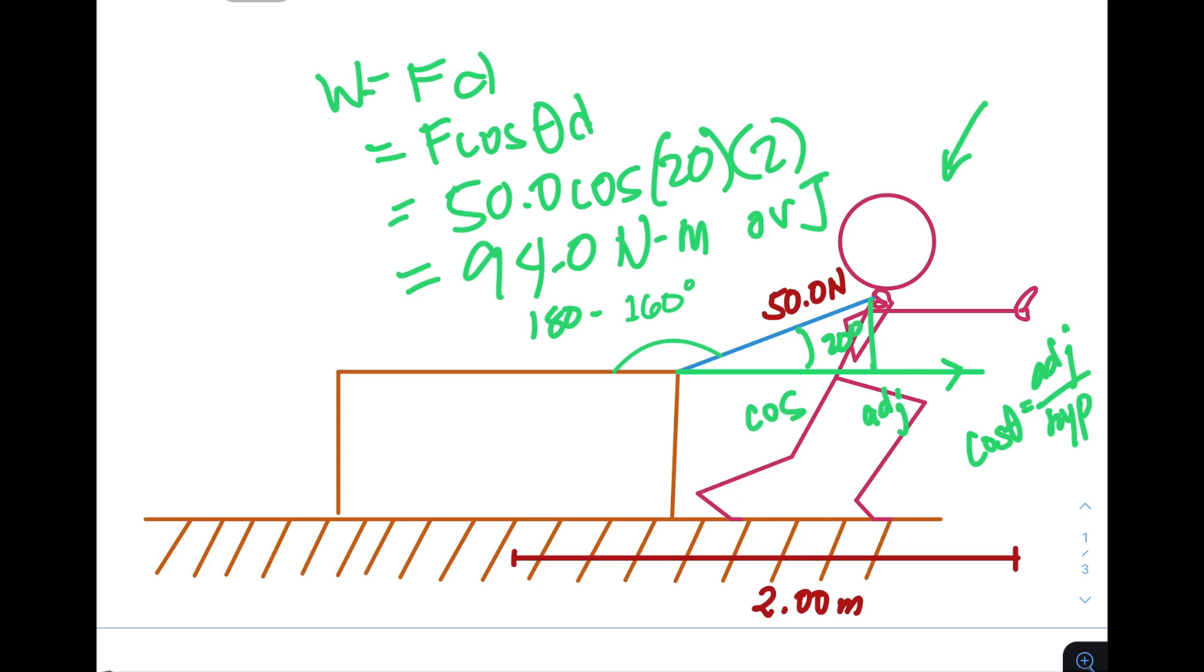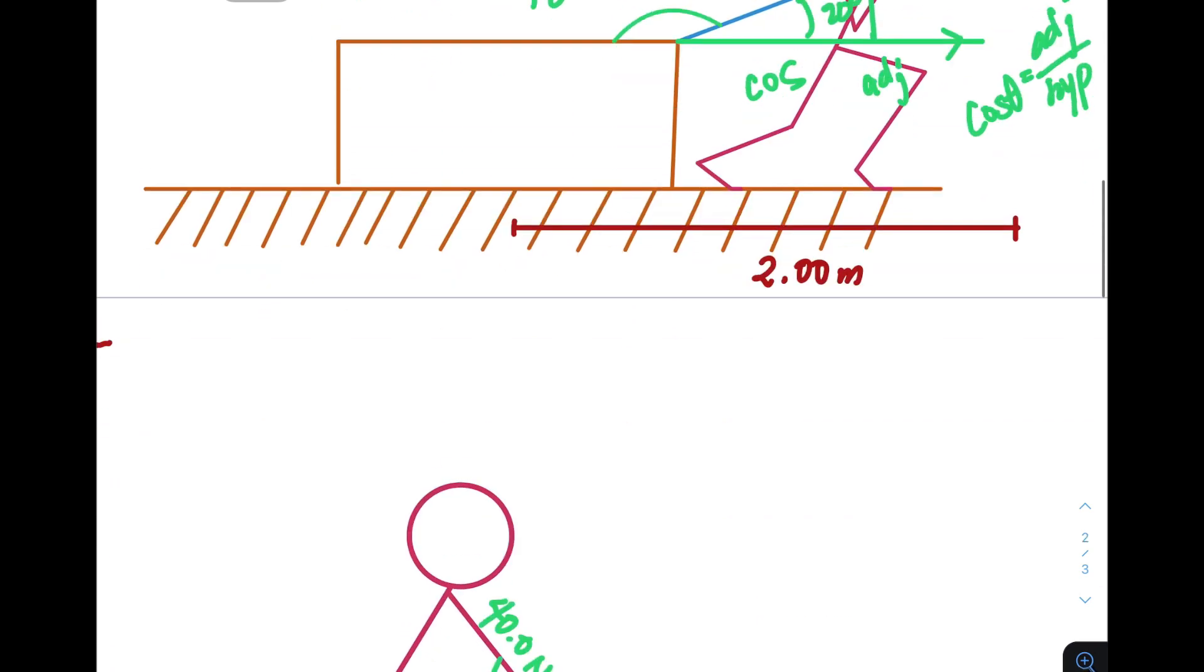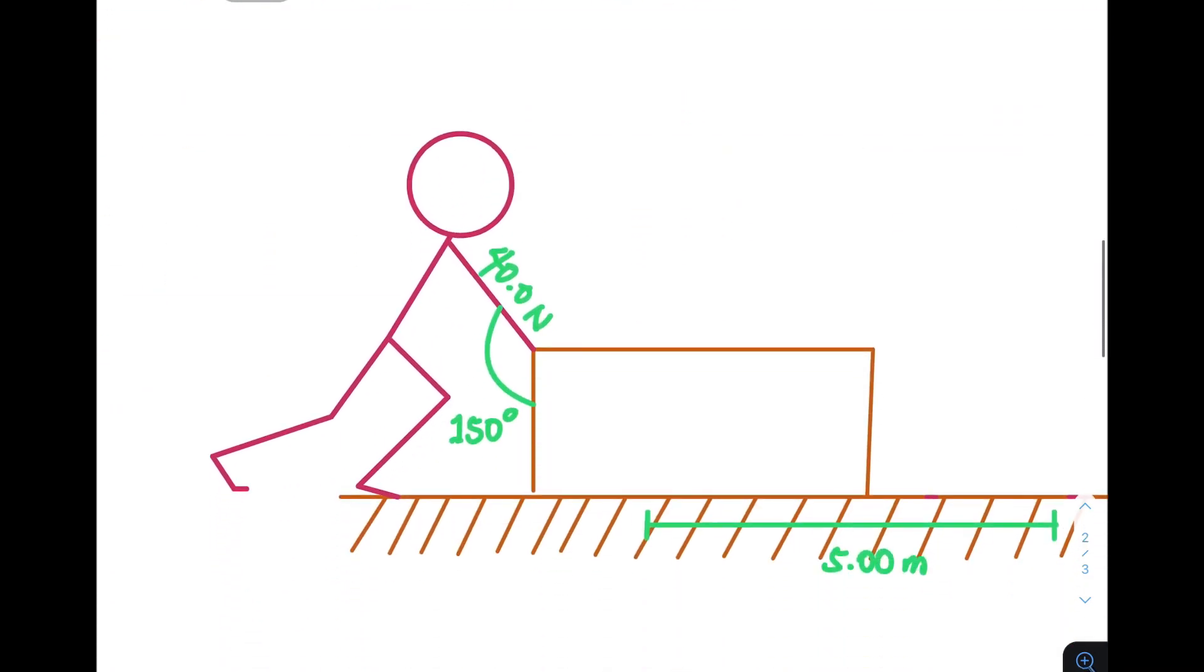Now let's have another example. Now in this example, instead of pulling the object, the object is being pushed at a certain angle. Now the amount of force applied was 40 newtons at an angle of 150 degrees from the object's wall, which is perpendicular to the horizontal.